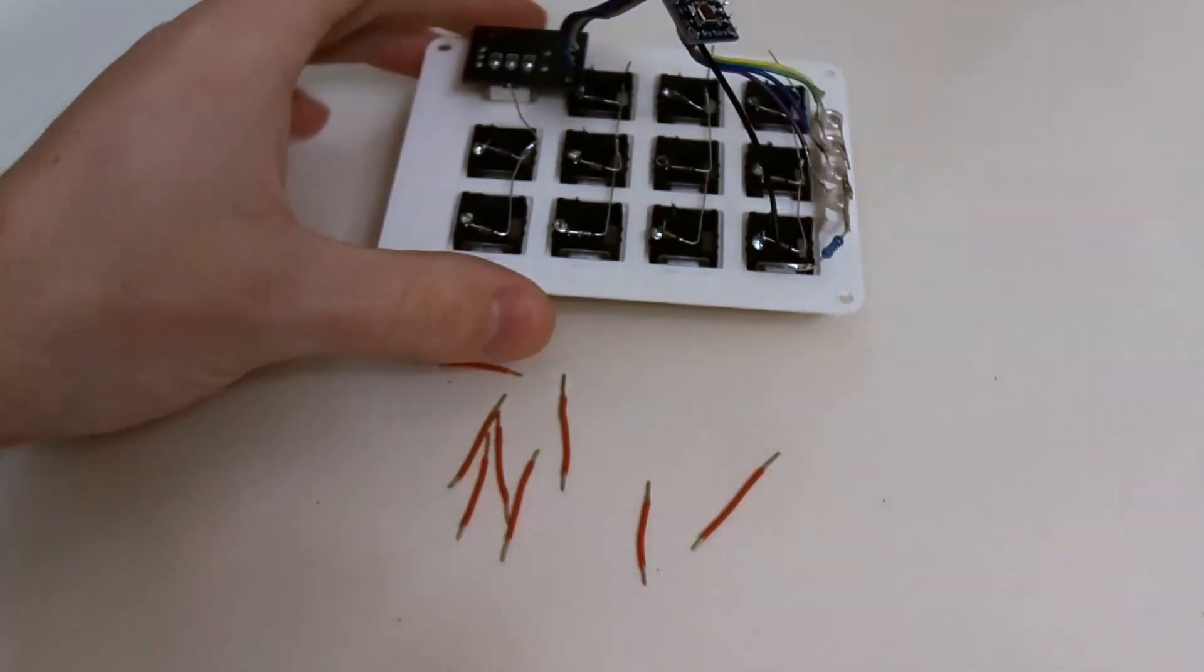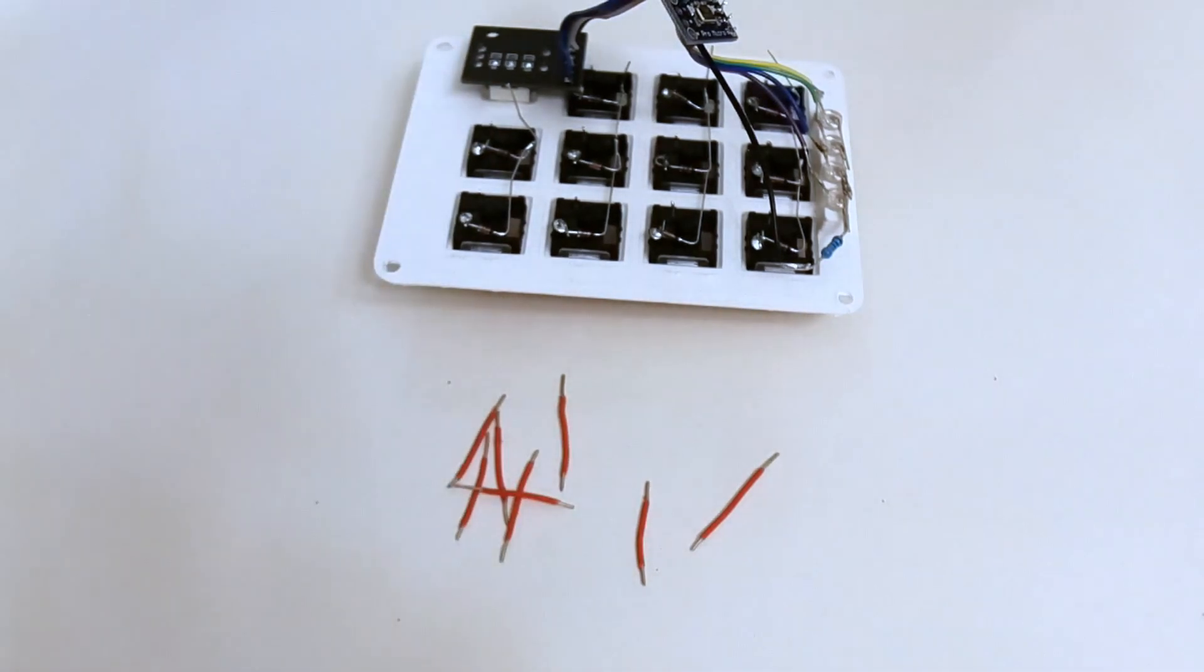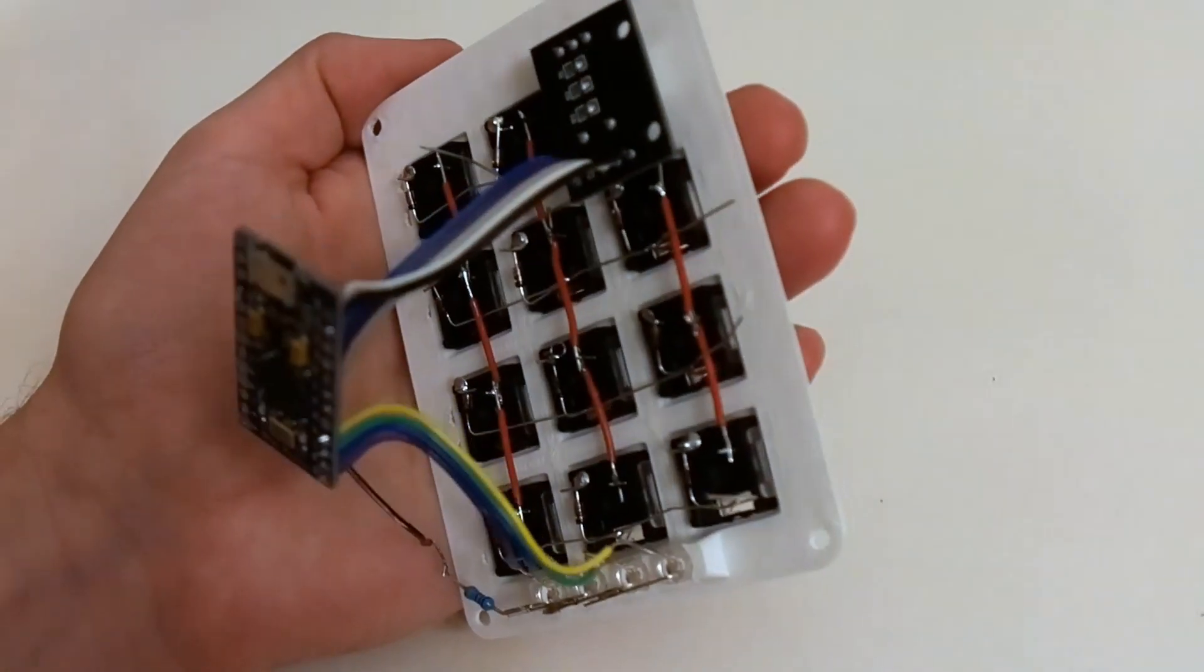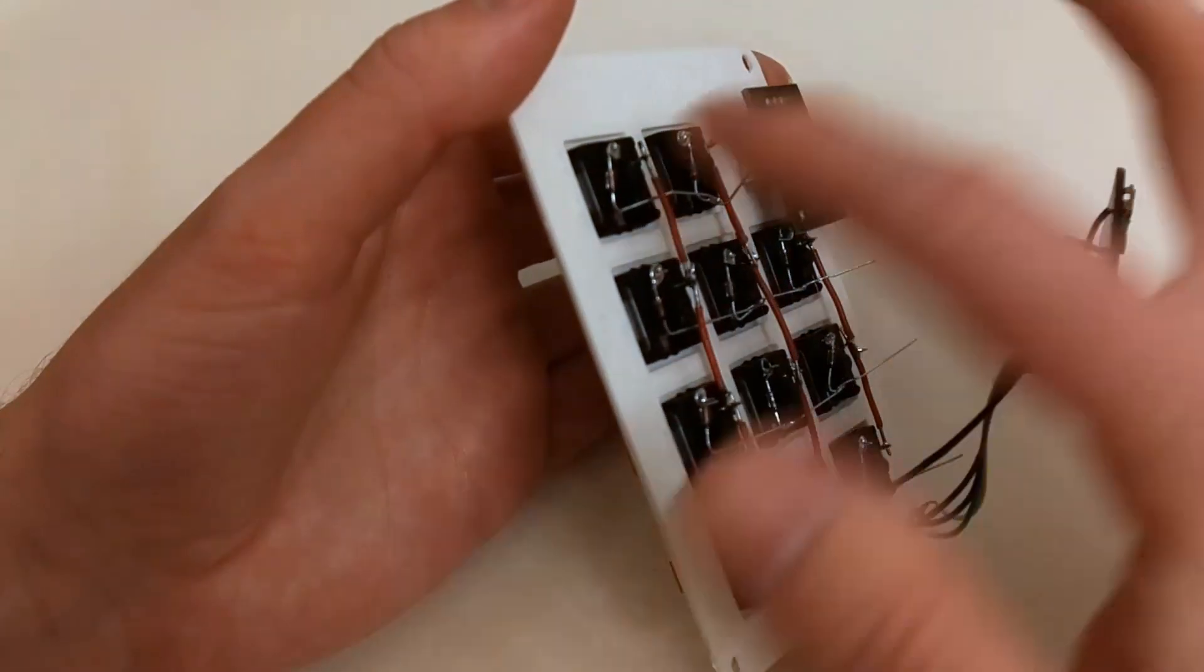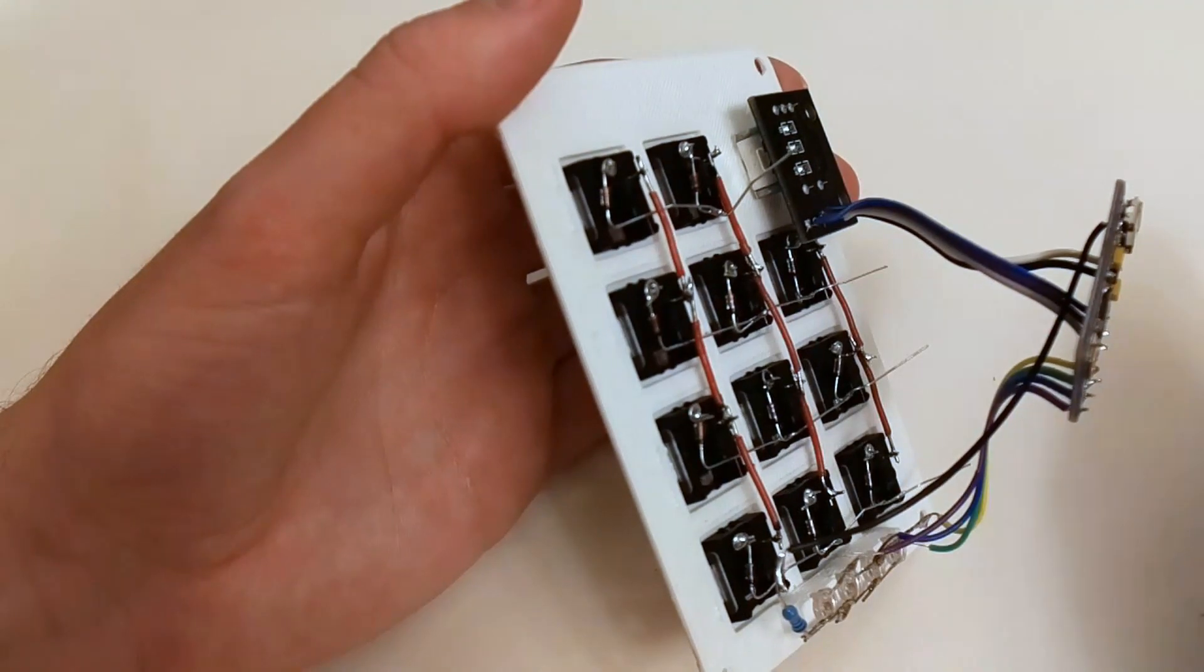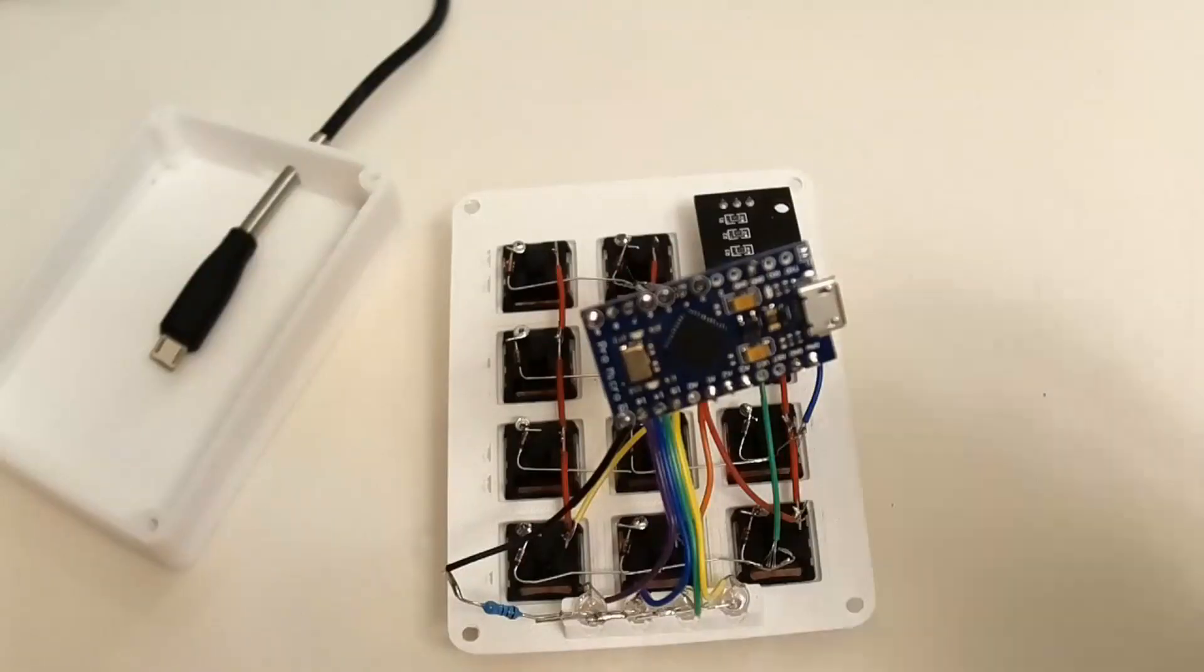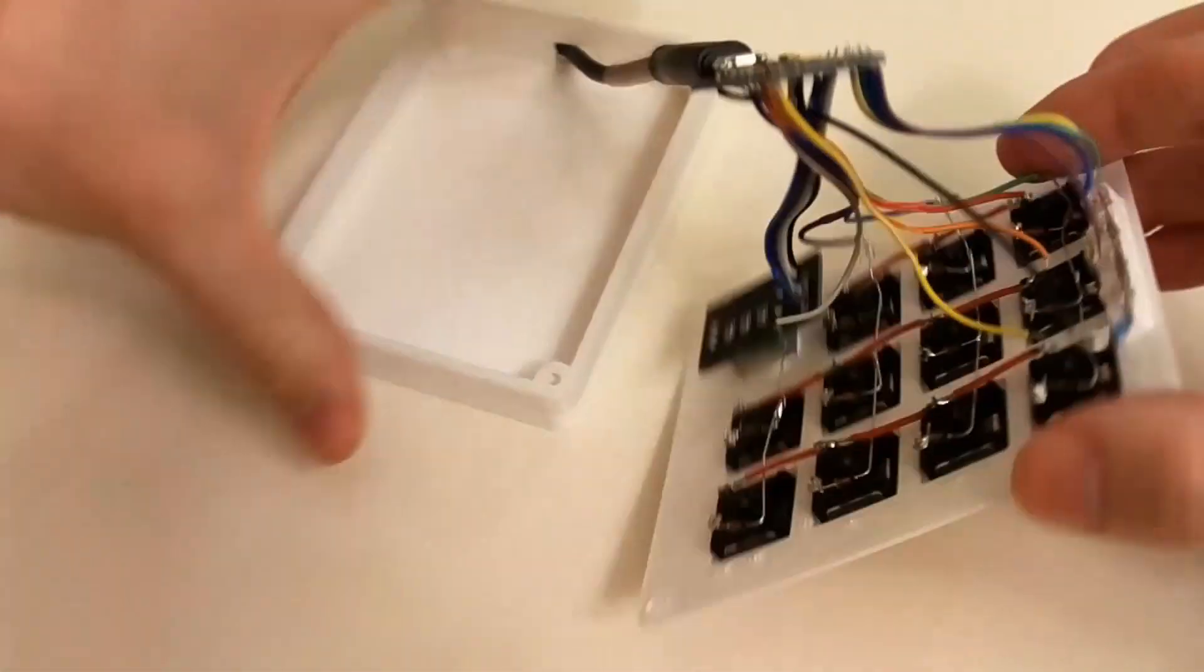You'll also need a bunch of short sections of wire, and these will go between each of the switches, forming kind of the columns of our matrix. Here are those wires in place. You can see the wires forming the columns and the diodes forming the rows across, and then each of those just gets connected to the Pro Micro, as well as all the LEDs and the encoder here.